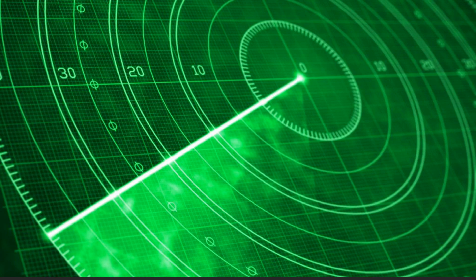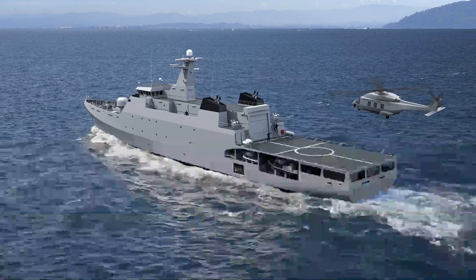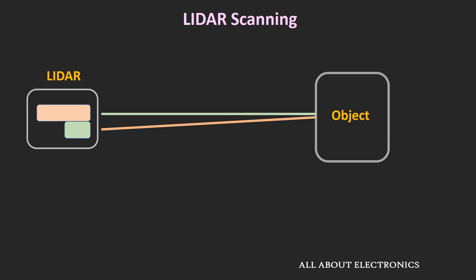When discussing different technologies used for range finding, let us also mention one more technology known as sonar. In sonar technology, instead of radio waves or light waves, acoustic waves are used for range finding or measuring distance. This technology is mainly used for underwater applications. Here is a quick comparison between LIDAR and the radar system. Apart from range finding applications, LIDAR is also used for 3D mapping and surface scanning, so there has to be some mechanism by which we can rotate the light source to scan the object.